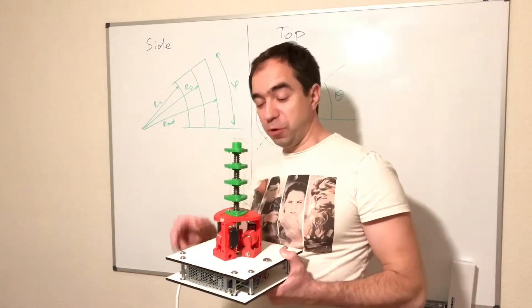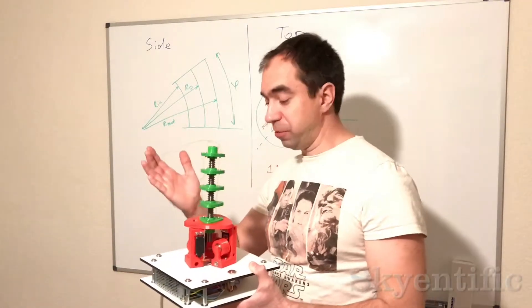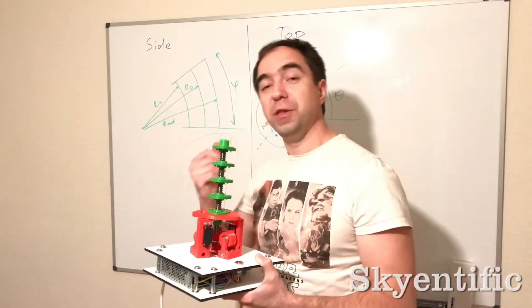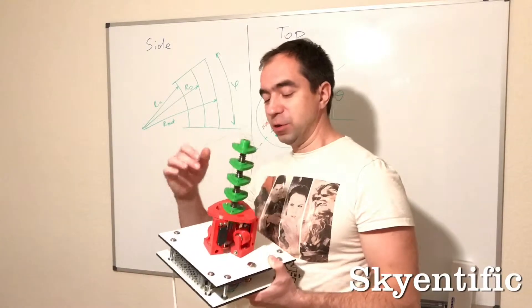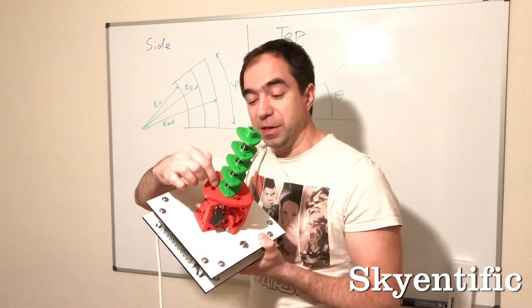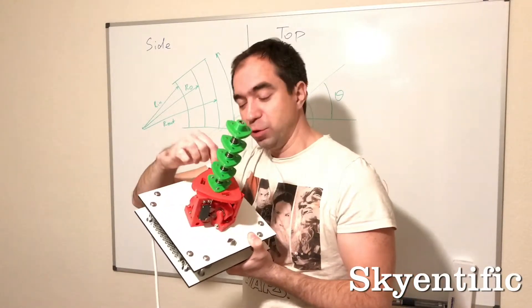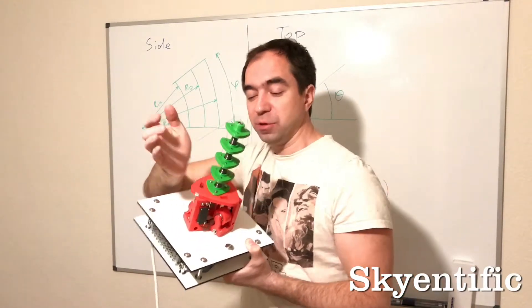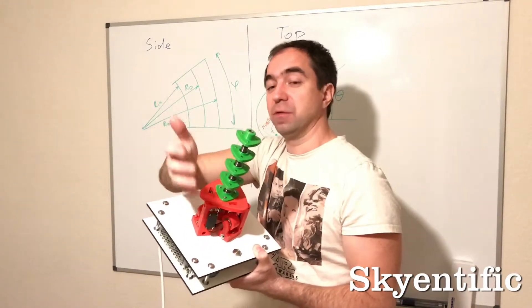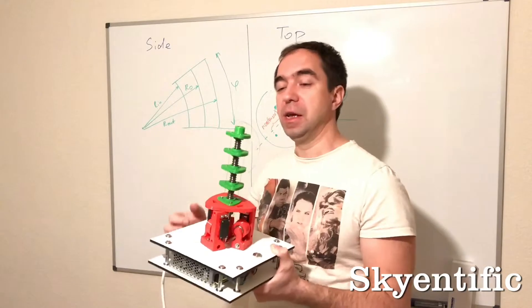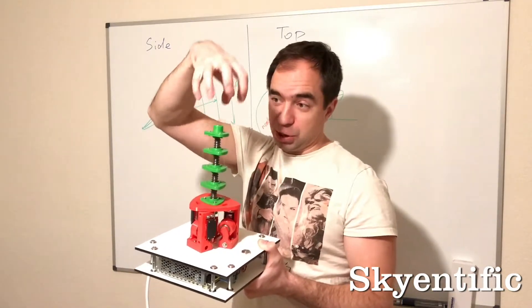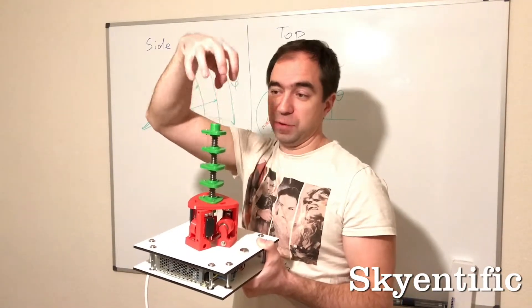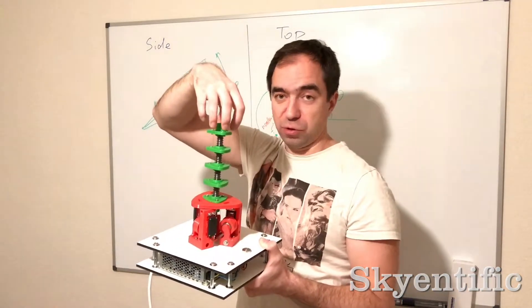Hi! Today I want to transform my beautiful continuum robot into a beautiful flower. That's why I made these holes to put three servos to control the leaves of the flower, and I also need to print the actual flower which will go on top.